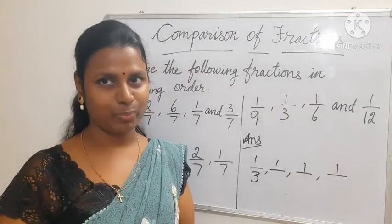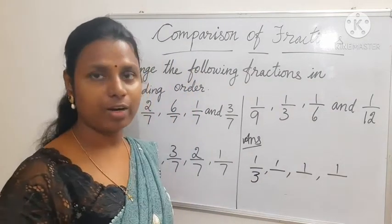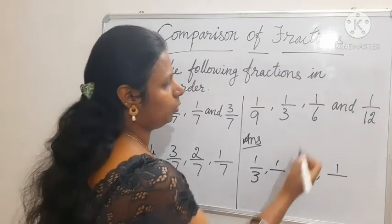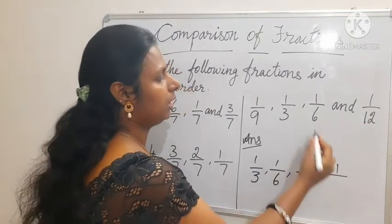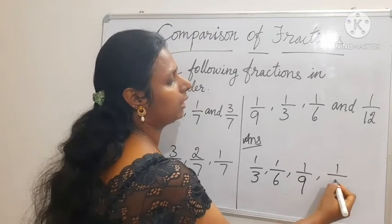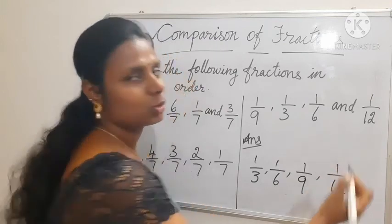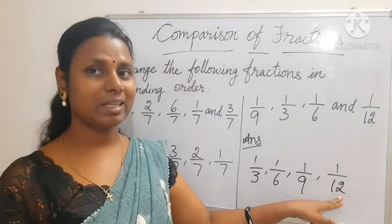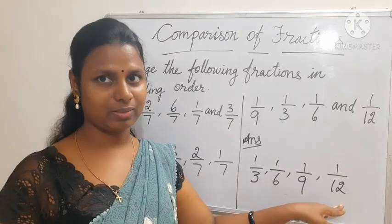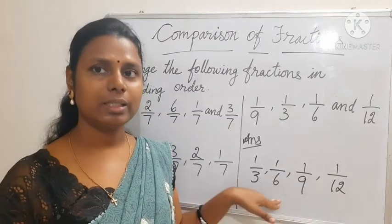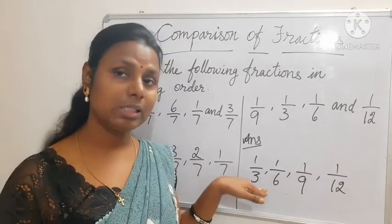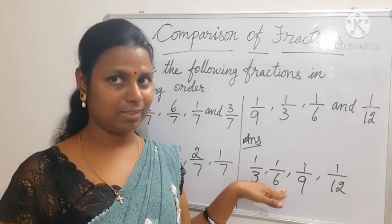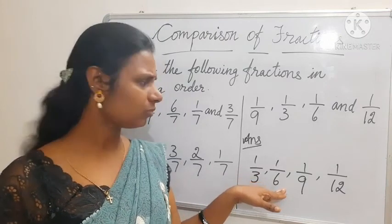Then next 1/6, then 1/9, then 1/12. As the number increases, the value decreases. So this is the descending order.